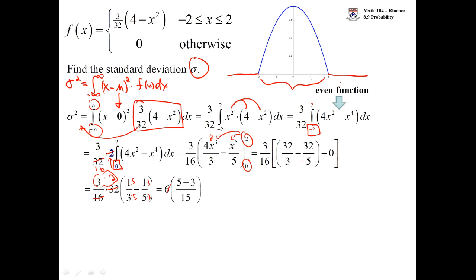So that's just 2/15. This 6 here, dividing out a 3, gives us a 2 and a 5 here. And then 5 - 3 is 2. So we get 2 times 2/5 or 4/5. That's the variance. That's σ².